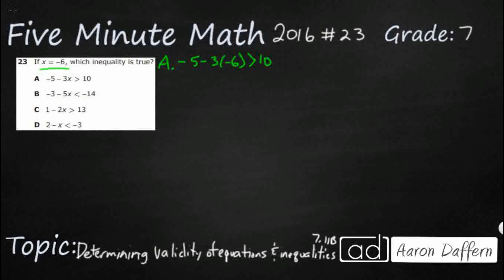And so we're going to use our order of operations - Please excuse my dear Aunt Sally. We're really not going to worry about any exponents or parentheses, just multiplication, division. So let's go ahead and multiply. We get negative 3 times negative 6. So 3 times 6 is 18, but negative times negative is addition. So it's going to be negative 5 plus 18. Two negatives make a positive is greater than 10.